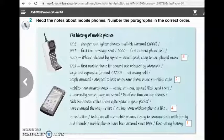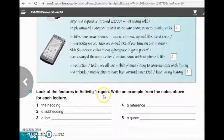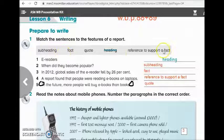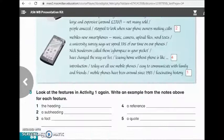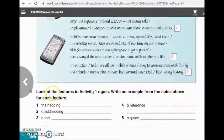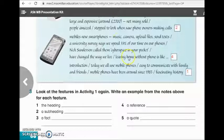Now let's move to activity number 3. Look at the features in activity number 1 again. Write an example from the notes above for each feature. So as you can see here we have the features of writing a report: subheading, fact, quote, heading and reference to support a fact. In this activity he asked us to write an example from the notes for each feature. For example, the heading, a subheading, a fact, a reference and a quote. I will give you 5 minutes. Try to do it by yourself. Good job girls. Now let's do it together.